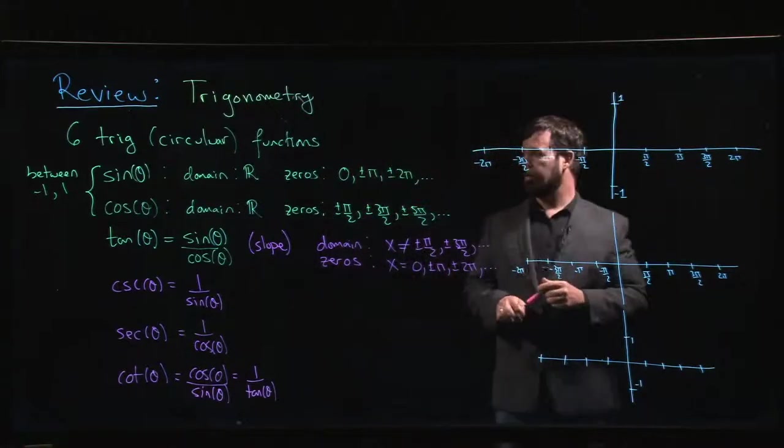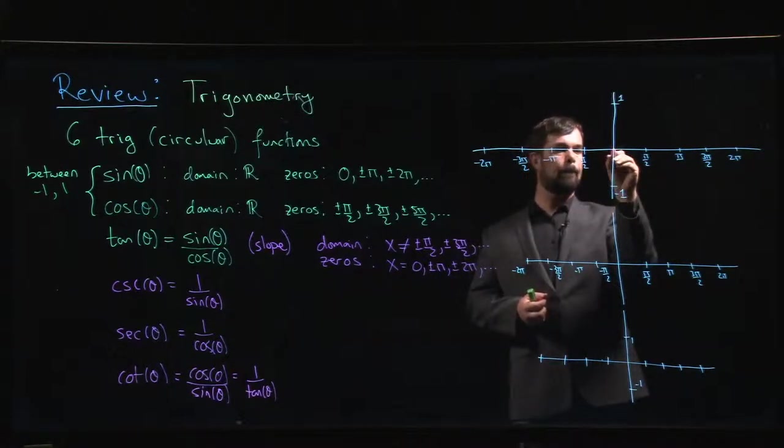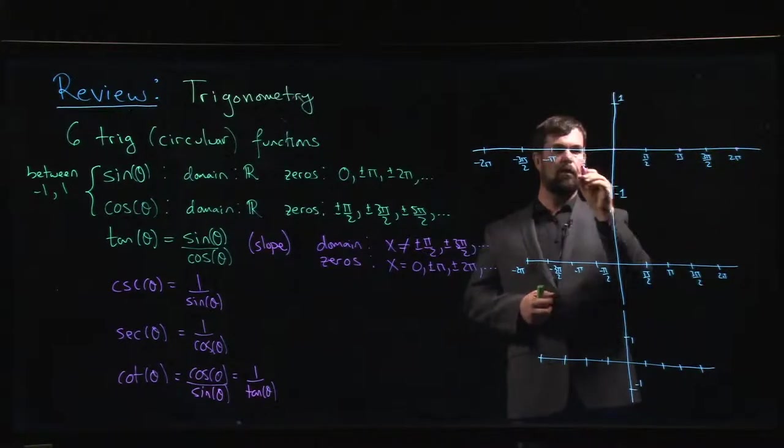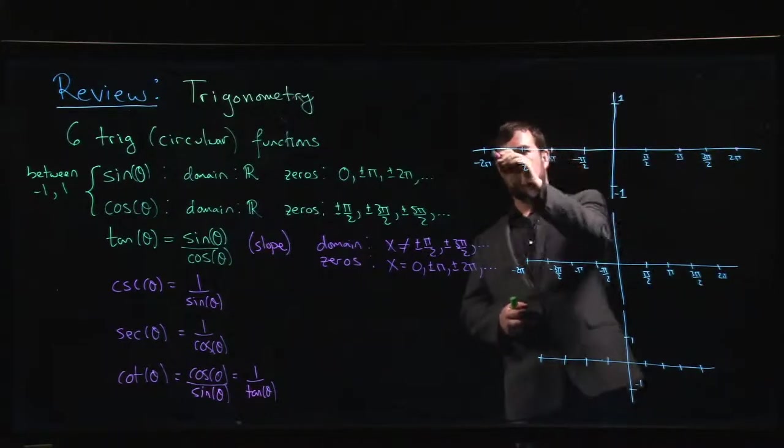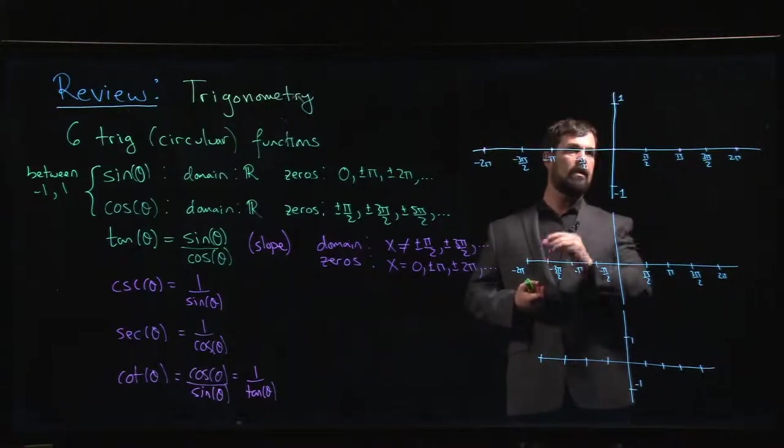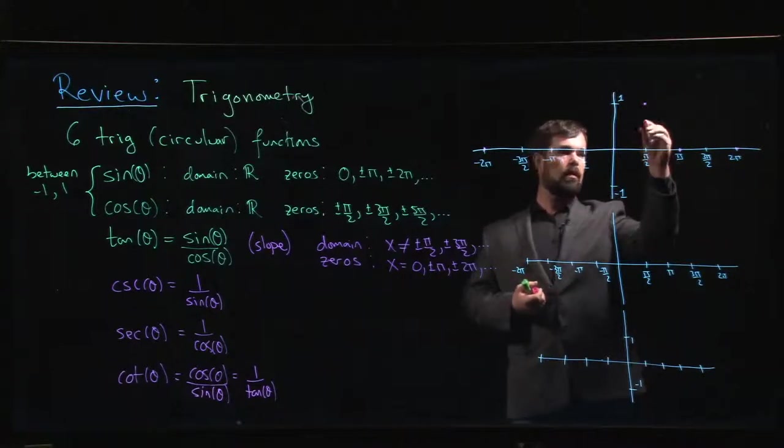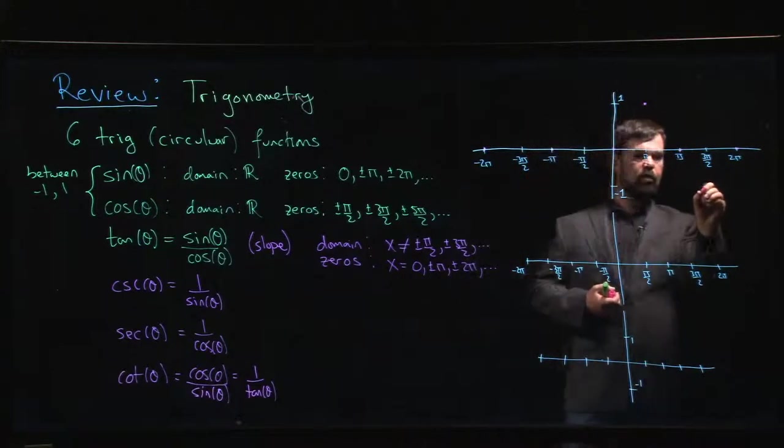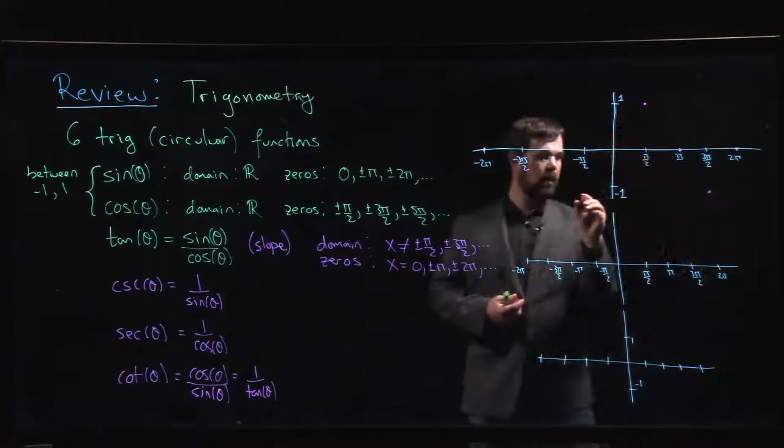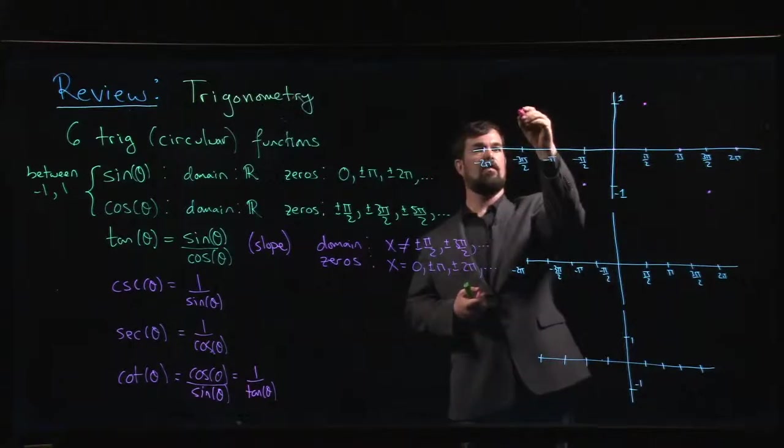But let's start with sine. So we know that sine has zeros at all the multiples of pi. We know that it hits its maximum value at pi over 2, right? Sine of pi over 2 is 1. At 3 pi over 2, it's down at minus 1. Same thing at minus pi over 2. Minus 3 pi over 2, it's back up at 1.